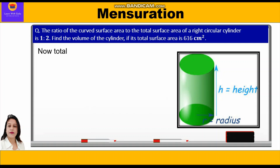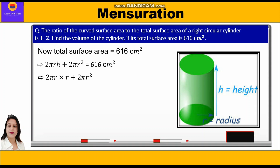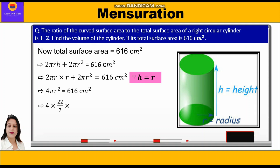Now, total surface area is 616 cm². The formula is 2πrh + 2πr² = 616 cm². Since h = r, we substitute height with r: 2πr·r + 2πr² = 616. This gives 2πr² + 2πr² = 4πr² = 616 cm².